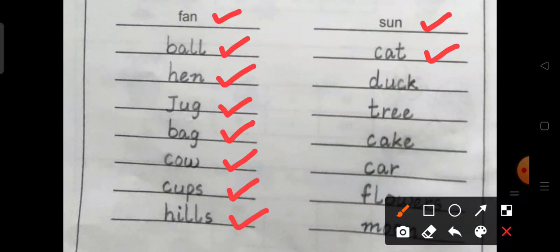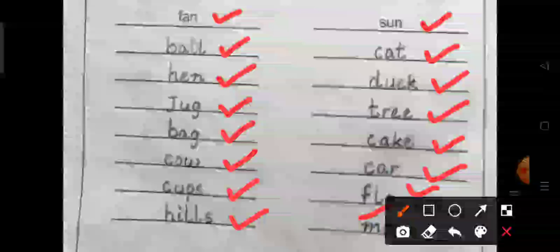Sun, cat, duck, tree, cake, car, flowers and moon.